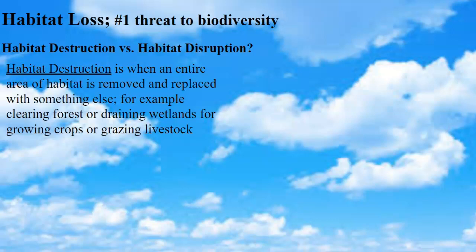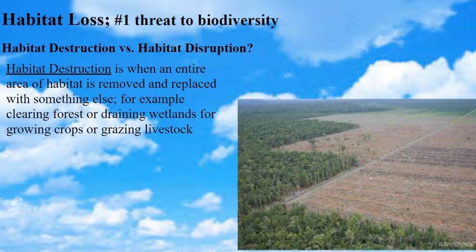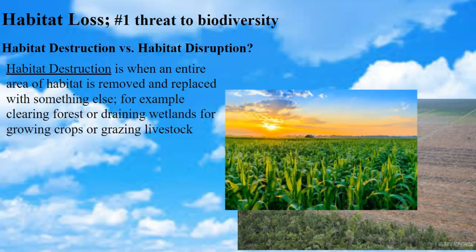This is an image of habitat destruction — when you clear cut an area and transform the landscape to something completely different from what it naturally was. This cornfield is what's known as a monoculture: you're growing one type of thing predominantly. It has very low biodiversity compared to what was there before.